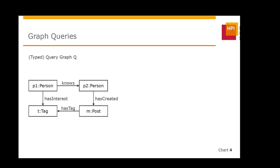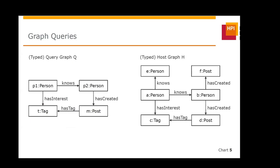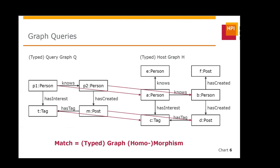A graph query in this talk is characterized by a typed query graph Q, which can be executed over a typed host graph H. This execution is called graph pattern matching, and yields a set of typed graph homomorphisms from the query graph Q into the host graph H. Those homomorphisms are called matches. Note that we only map vertices explicitly and edges are mapped implicitly, which is a very common notion in practice. To also emulate match edge mappings, one could easily just model the edges as nodes.